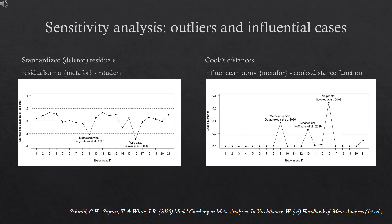The high heterogeneity in the dataset may also be caused by extreme effect sizes, while the pooled effect estimate may be highly dependent on a single experiment. For models fitted with the RMA family of functions, outliers can be detected using different types of residuals, and influential cases based on Cook's distances. For multi-level models, there is an option to specify a clustering variable. We assumed that standardized residuals greater than or less than 1.96 indicate outliers, and Cook's distances greater than 4 divided by the total number of data points indicate influential cases.